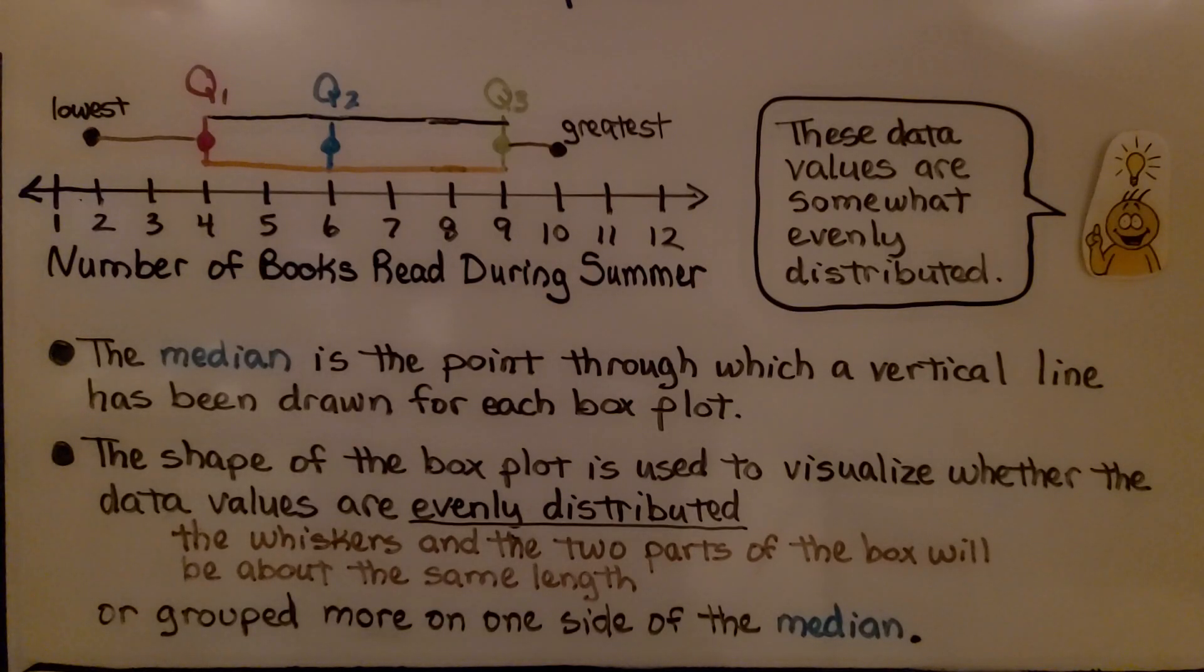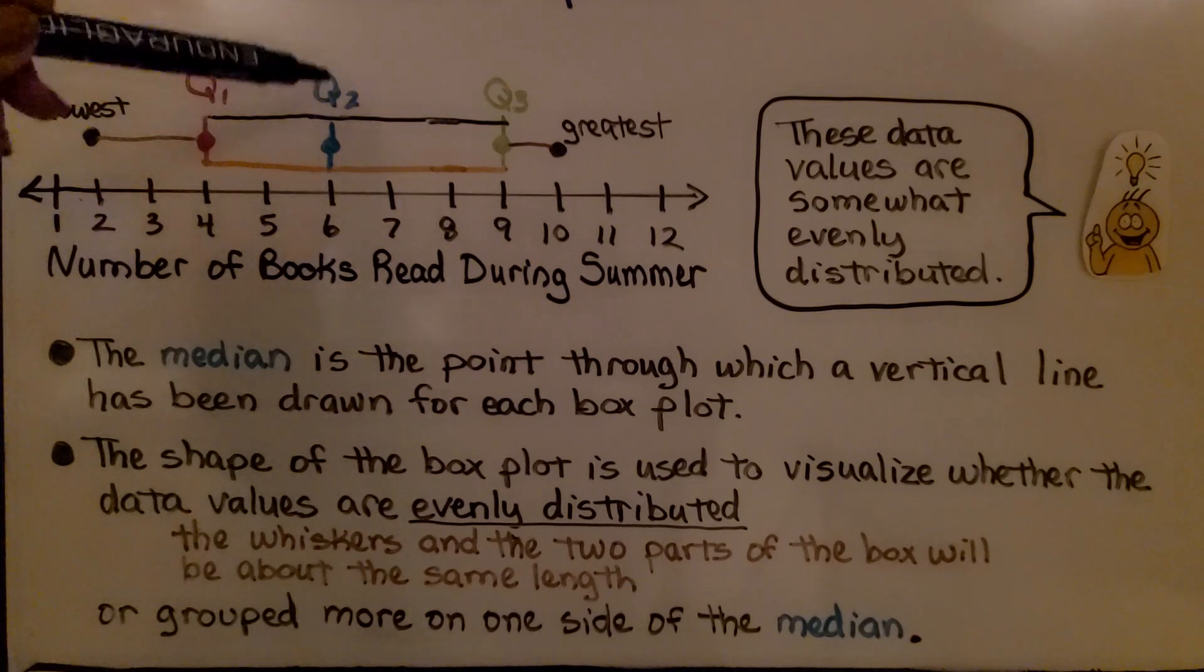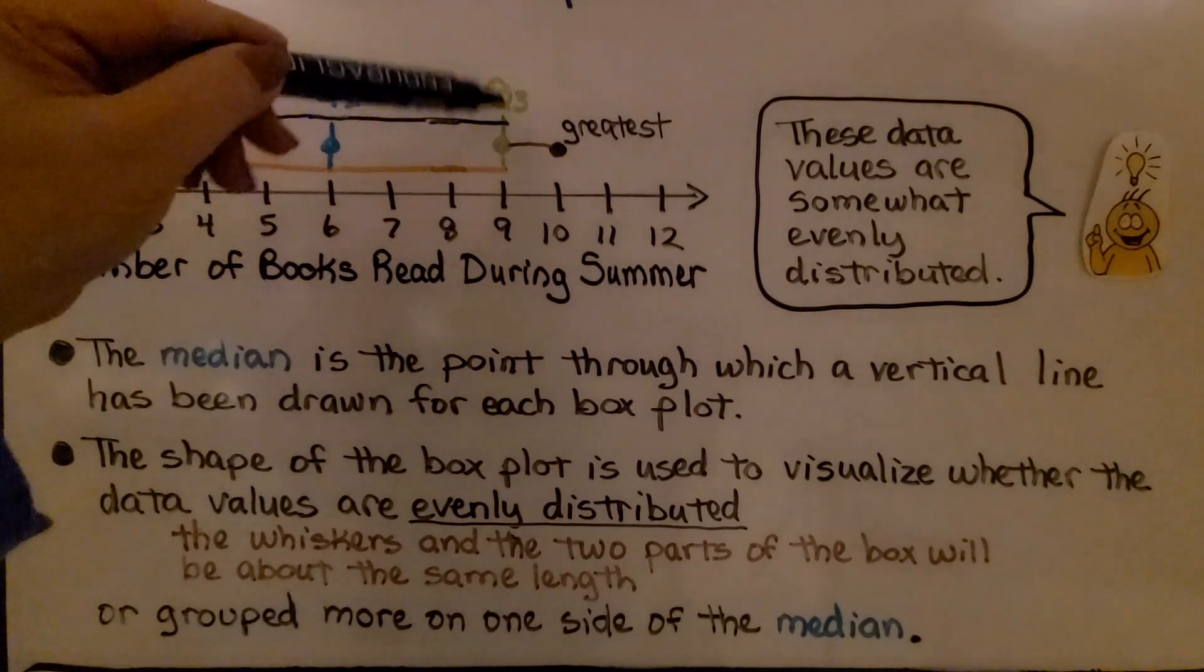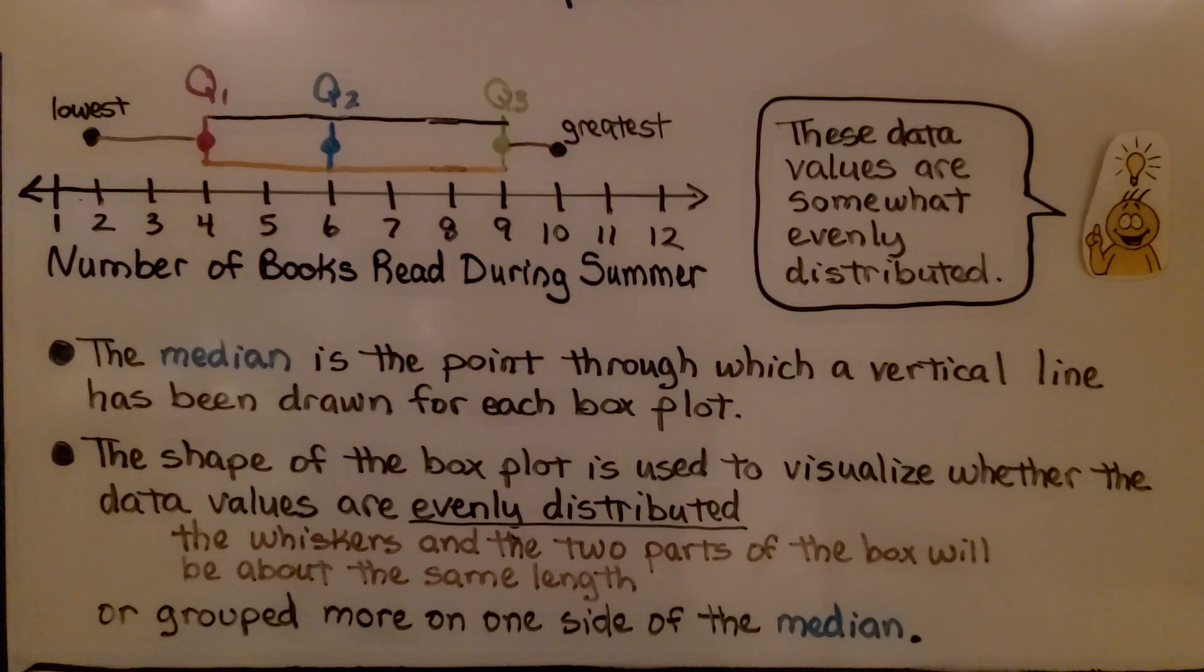Take a look at this box plot. We have our lowest value, our greatest value, and we have the first quartile, the median, which is the second quartile, and the third quartile. It's the number of books read during summer for some students.